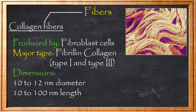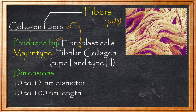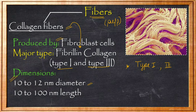Regarding collagen fibers in the pulp: fibroblasts produce collagen fibers in the pulp, while dentine collagen is formed via odontoblasts. The collagen fibers in pulp are fibrillary collagen, specifically Type 1 and Type 3 collagen. The diameter is 10 to 12 nanometers and the length is 10 to 100 nanometers — this is curriculum information but not critical to memorize.